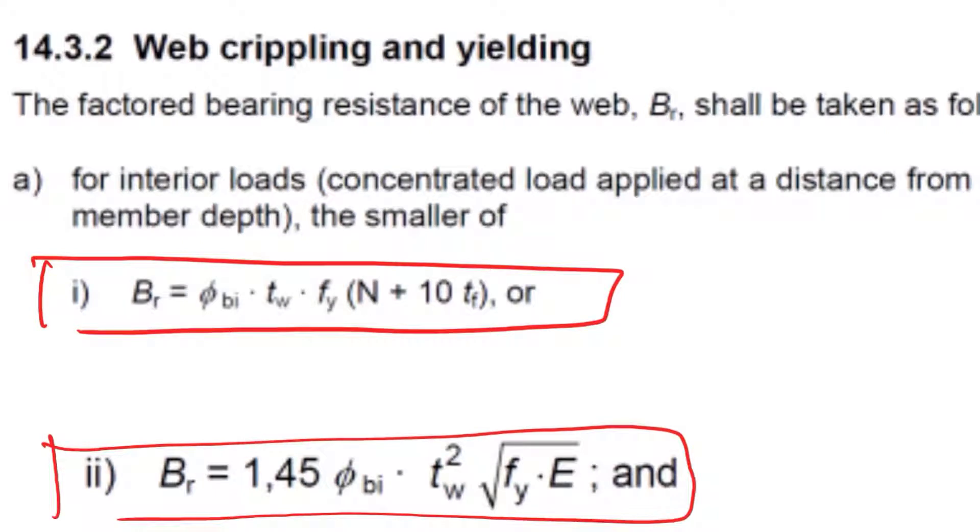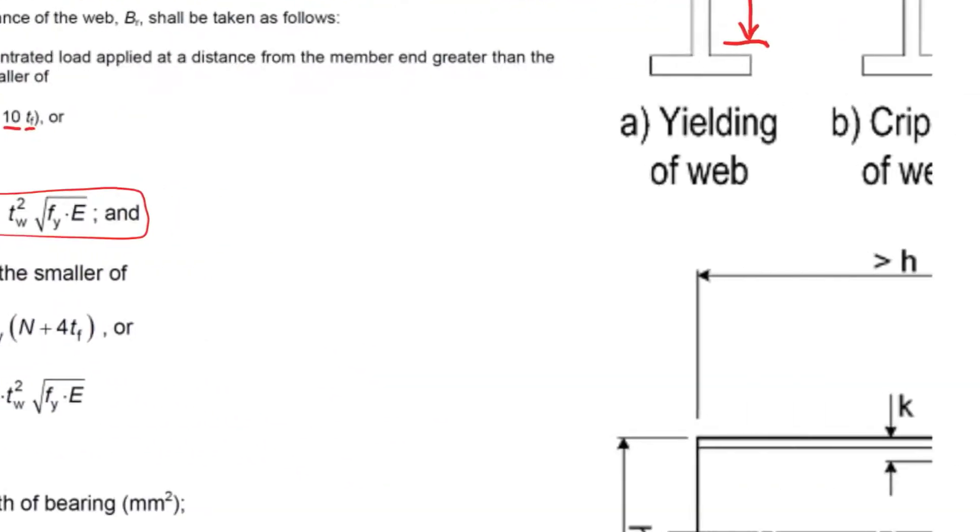One way to understand these equations: if you look at bearing resistance, N is a distance and 10 times tf are distances. When multiplied by tw, it's an area times yield stress, giving you a force, then a partial factor.